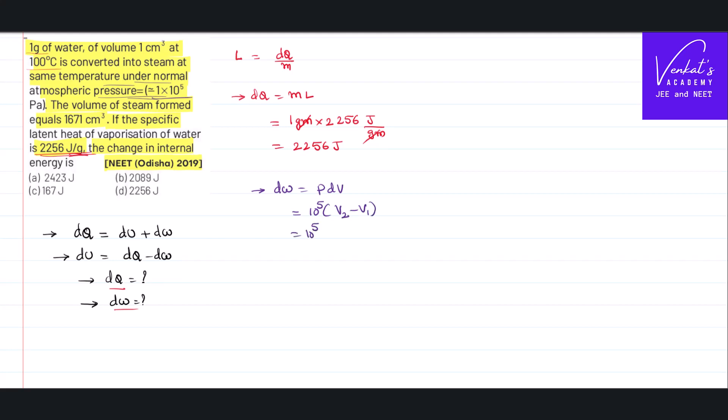It is given that final volume is 1671. Initial volume is 1. Of course units are centimeter cube. But this 10⁵ is an SI system Pascal. So I need to convert this centimeter cube into meter cube. So 10⁵, 1671 minus 1, 1670.